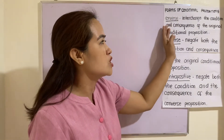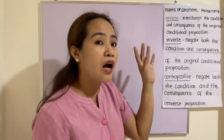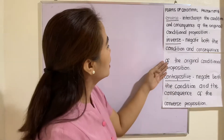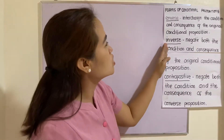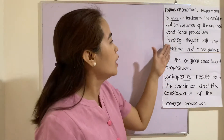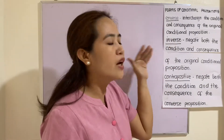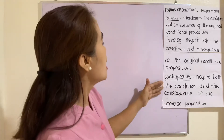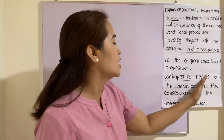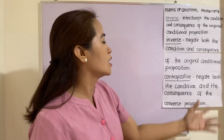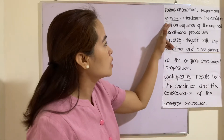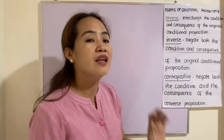Always remember these definitions. The first one — converse — interchange the condition and the consequence, meaning interchange the if and the then part. For the contrapositive, negate the condition and the consequence of the converse proposition. You have to look at the converse and then negate it.